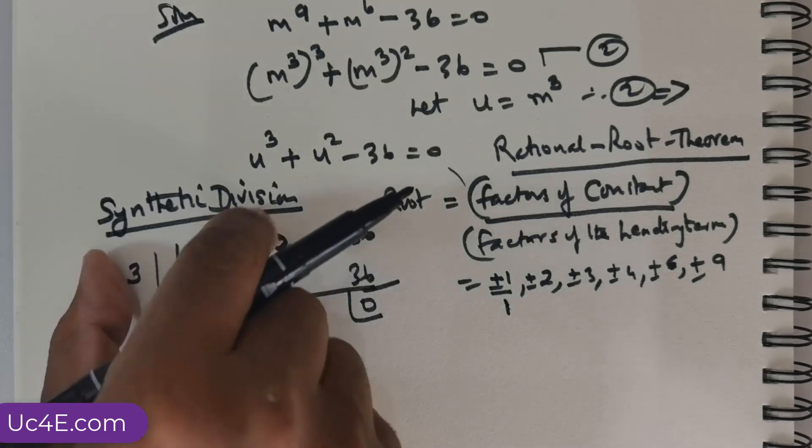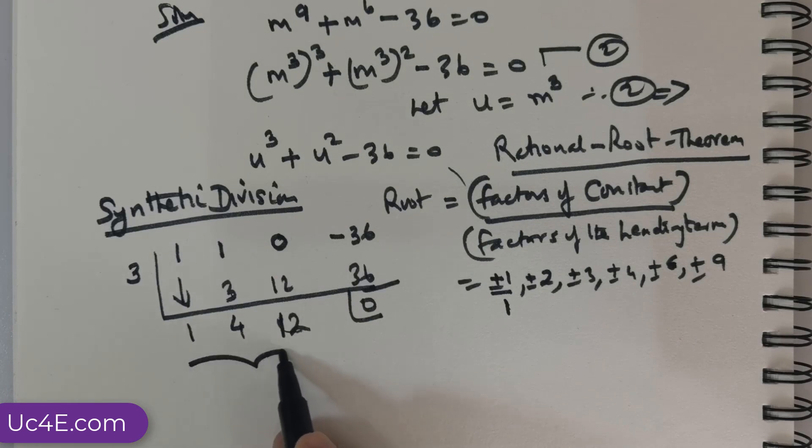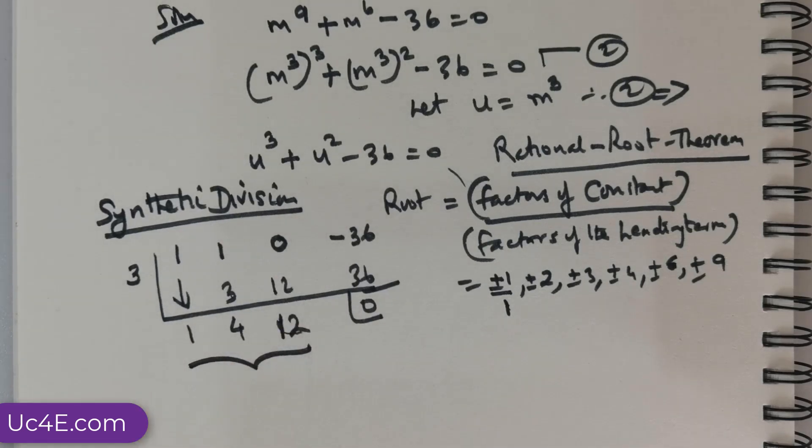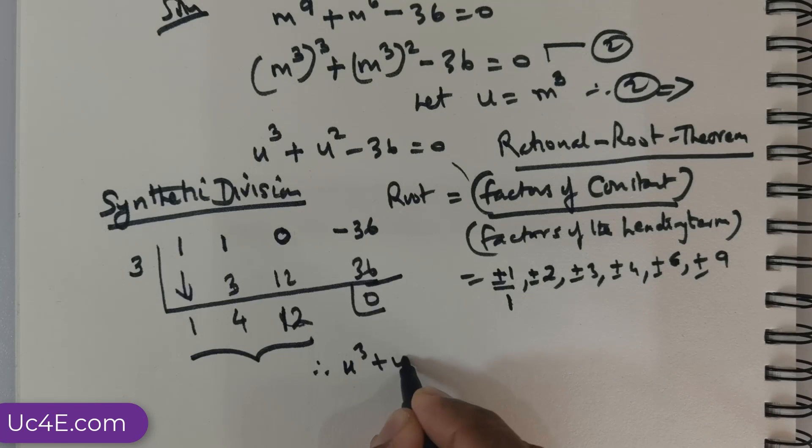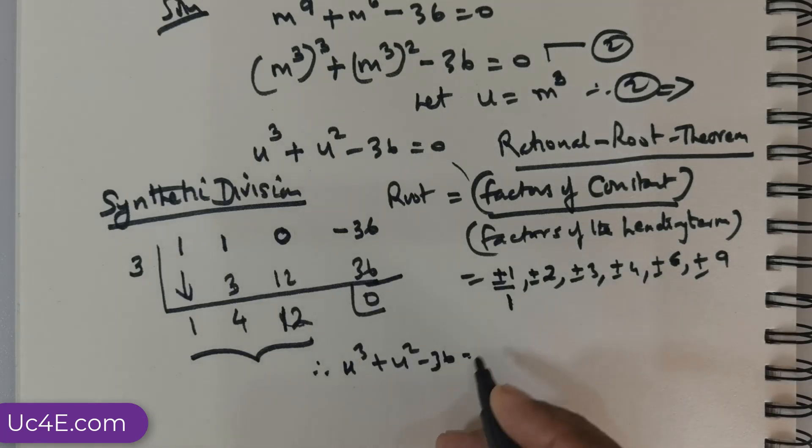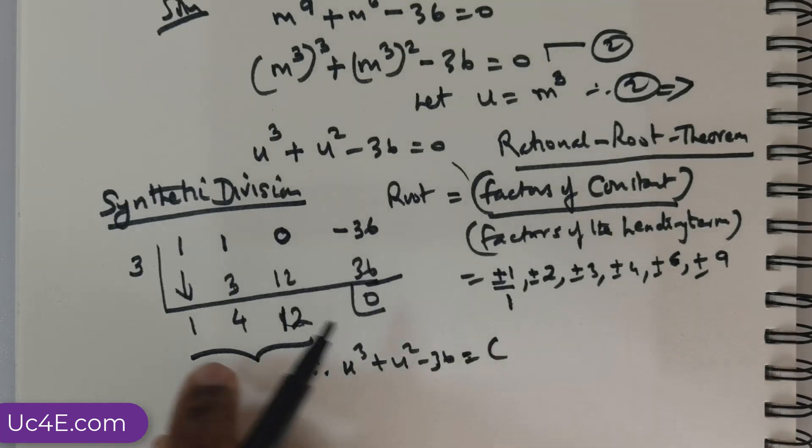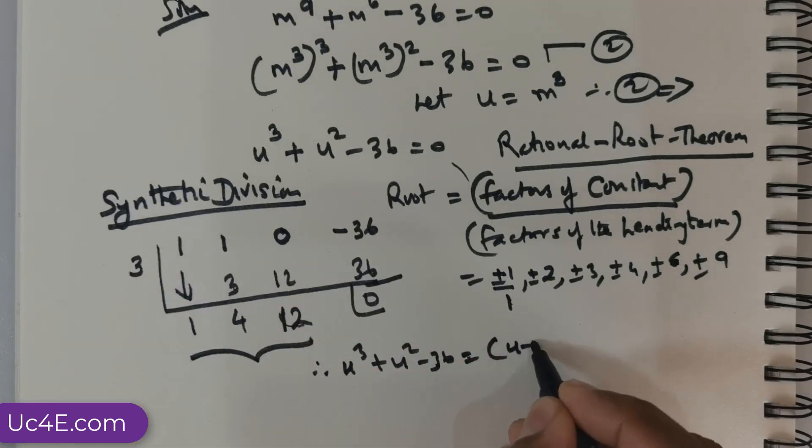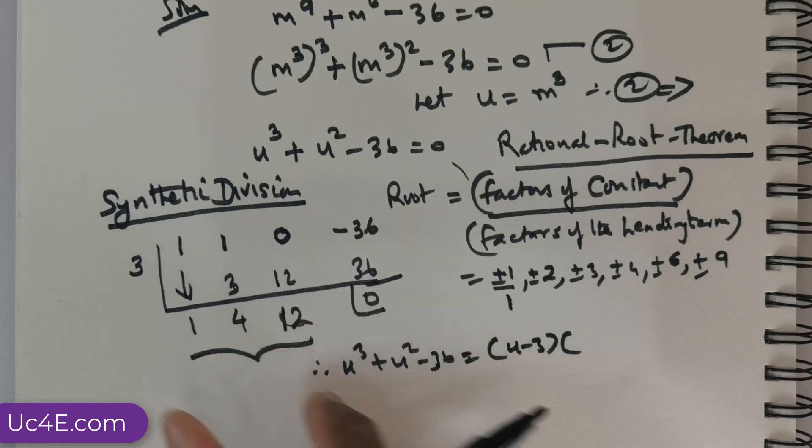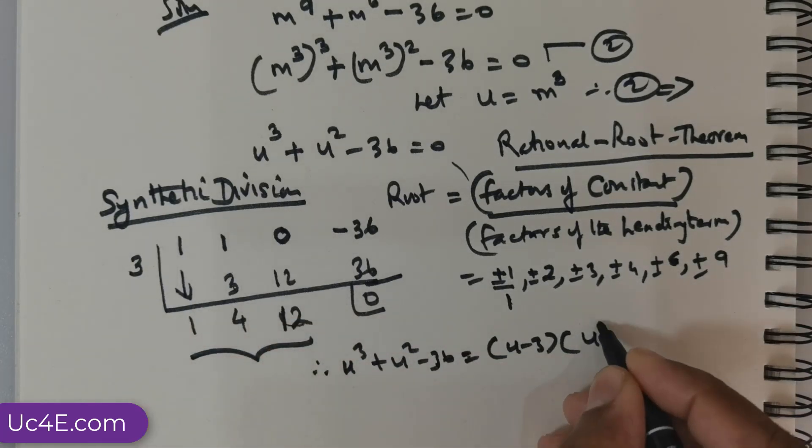Now, why do I show you this? I am showing you this technique, synthetic division. Because, I am able to extract the actual quotient here. This is a polynomial. So, therefore, if I were to write u^3 + u^2 - 36 as a product of two quantities, I can very well start by writing, if u = 3 is a root, then u - 3 is a factor.